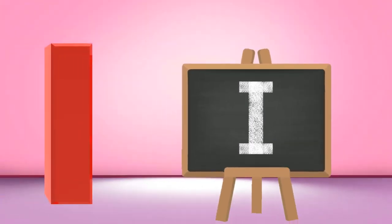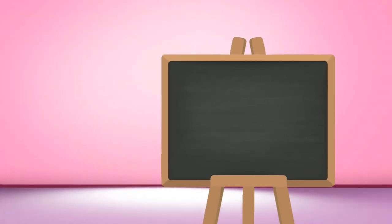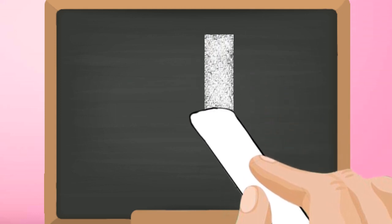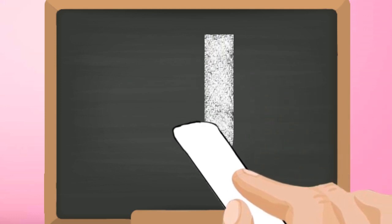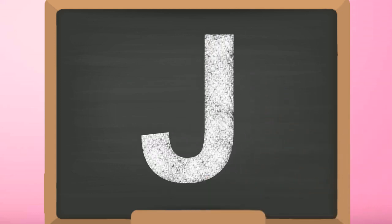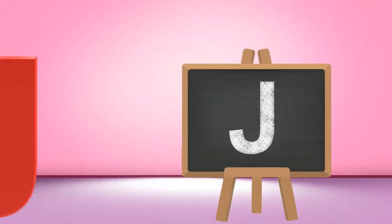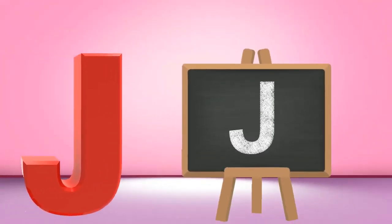J, capital J. Start from the top and draw a standing line to the bottom with a small backward curve. Capital J.